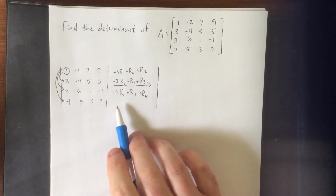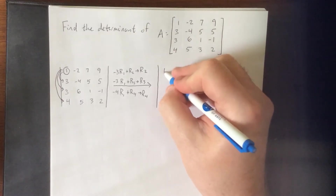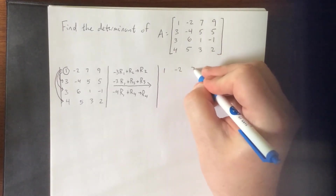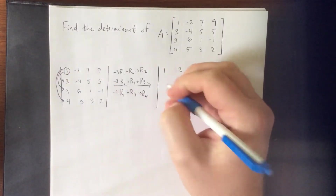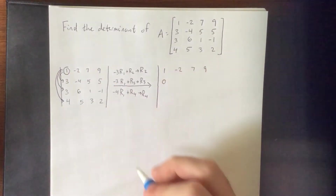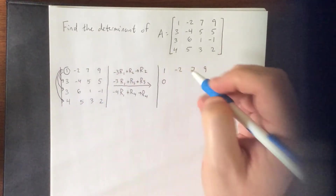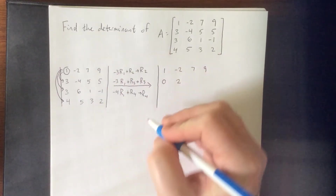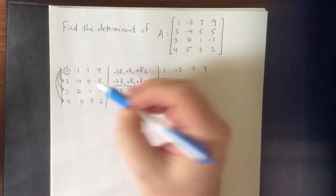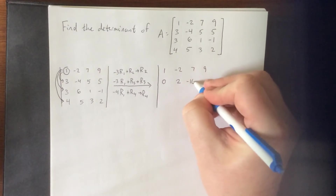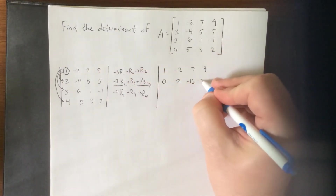Adding multiples of the first row to the other rows has no impact on the determinant. For the new second row: -3×1 + 3 = 0; -3×(-2) + (-4) = 2; -3×7 + 5 = -16; -3×9 + 5 = -22.